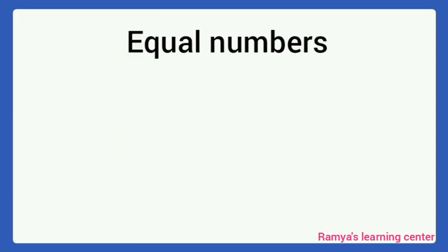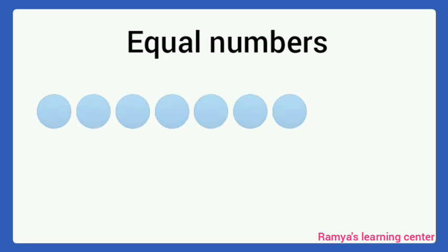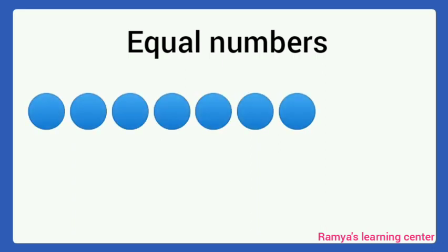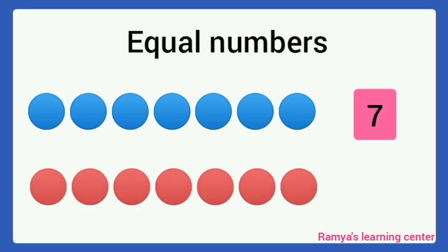Then, equal numbers. How many blue balls are here? 1, 2, 3, 4, 5, 6, 7. Then, how many red balls are here? 1, 2, 3, 4, 5, 6, 7. Here, the numbers are equal.